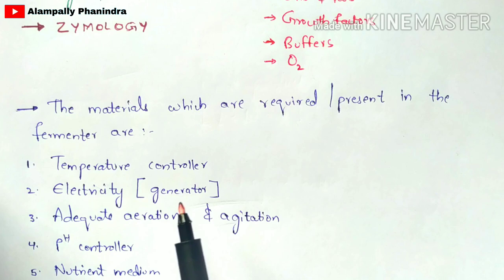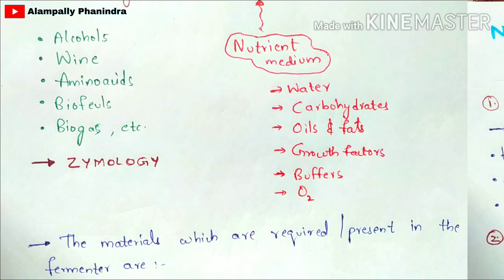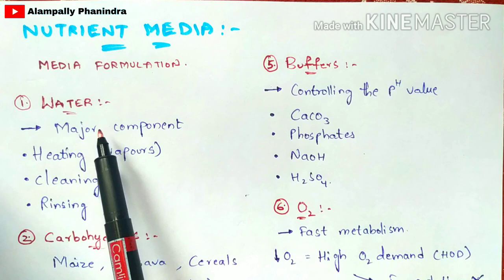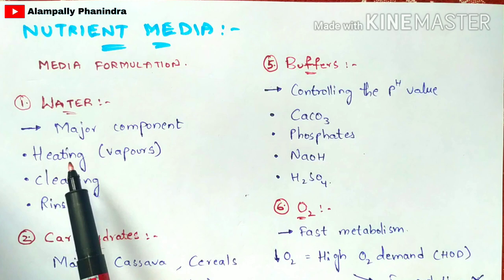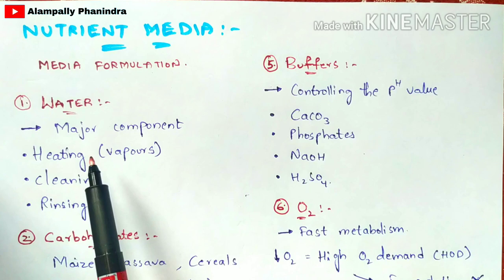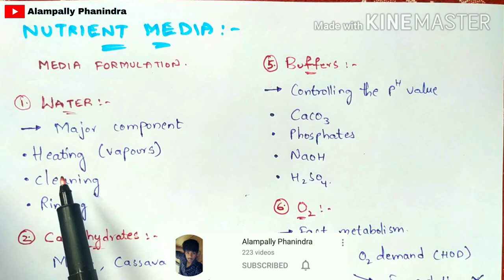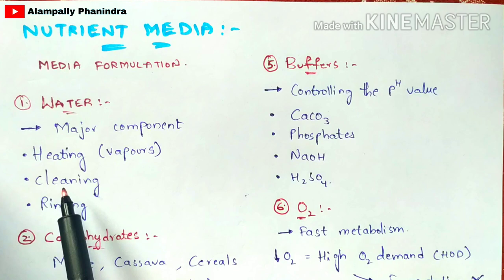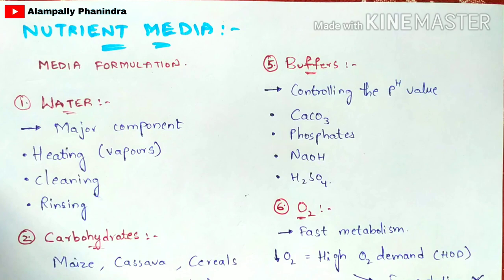The nutrient medium plays a major and vital role in fermentation, helping convert sugars into alcohols, acids, and gases. The first component is water. Water acts as a major component of the nutrient medium and is used for vaporization, which helps convert primary metabolites into secondary metabolites. Water is also used to clean the fermentation tank to prevent contamination of bacteria such as Aspergillus niger or lactic acid bacteria.